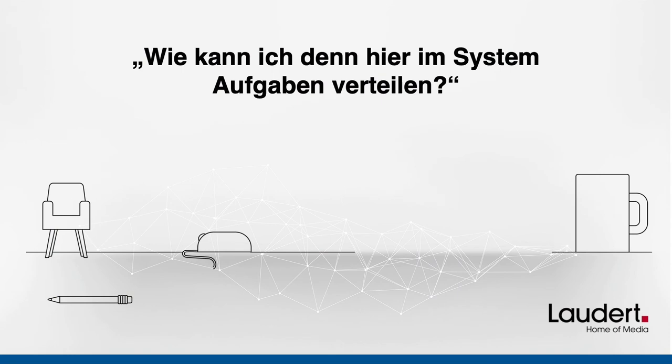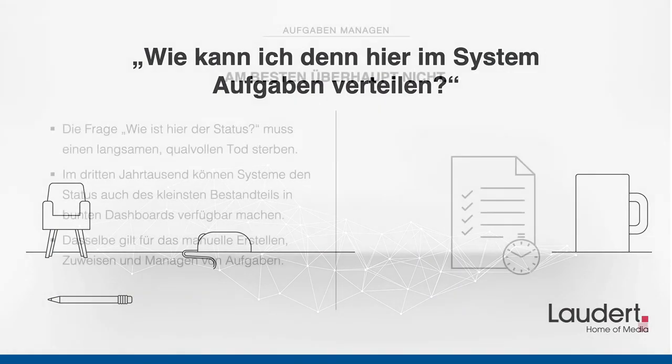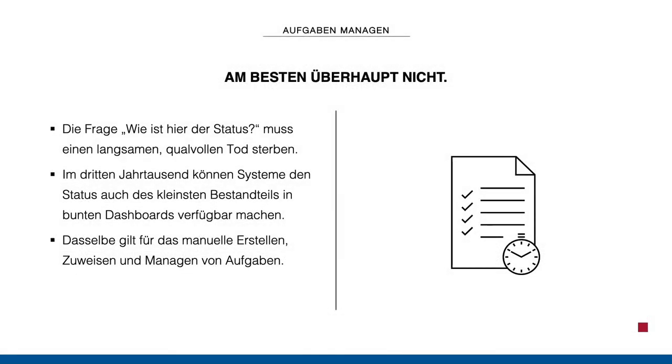One of my favorite topics: how can I tell Peter to take the photograph? The answer is: not at all, because there's good and bad communication in a project. 'What is the status here?' — this must die a horrible long death. This type of communication is no longer needed because we have systems in the third millennium. I have a dashboard and I can know immediately about the status and state of affairs.